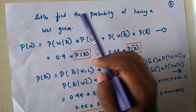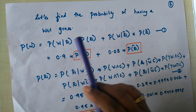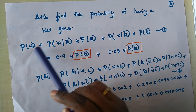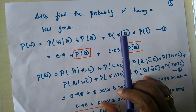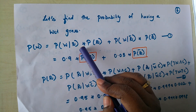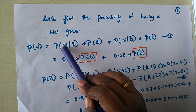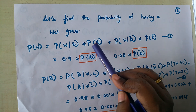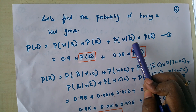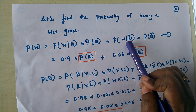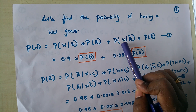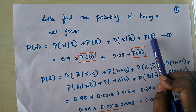Using this example, let us find the probability of having wet grass. Wet grass has one parent: rain. The probability is calculated as the conditional probability of wet grass given rain, multiplied by the probability of rain, summed with the conditional probability of wet grass given not raining, multiplied by the probability of not raining. A wet grass can also happen when it is not raining, which is why we consider this probability as well.